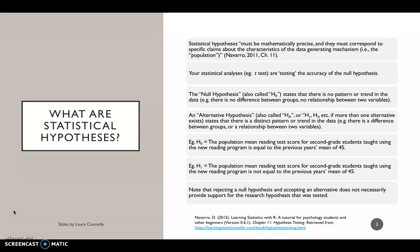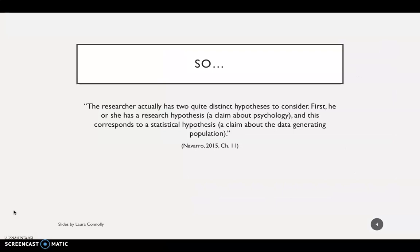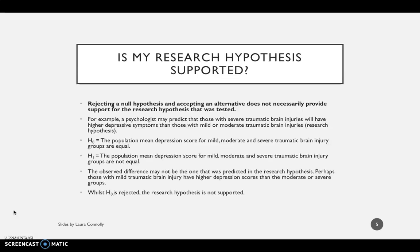I'll explain why that could be in a minute. But to summarize, you as the researcher really have two very distinct hypotheses to consider. Firstly, you have a research hypothesis, which is your claim about psychology or a particular phenomenon that's occurring with your variables. And this corresponds to a statistical hypothesis — your null and alternative hypothesis — which you're testing with your analyses. And this is a claim about how your population is going to behave.